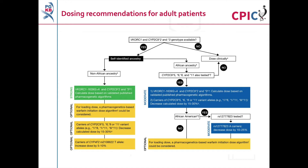These are the CPIC dosing recommendations for warfarin in adult patients, shown in figure 2 of the guideline publication. For patients with self-identified non-African ancestry who have been genotyped for VKORC1 and the CYP2C9 star 2 and star 3 alleles, there is a strong recommendation to calculate warfarin dose based on validated published pharmacogenetic algorithms.